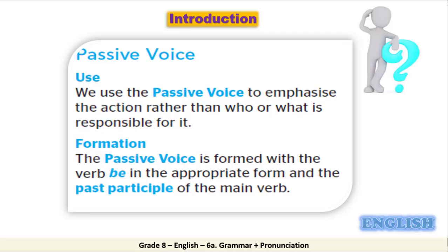Now let's have a look at the introduction of our lesson today. In today's lesson, we'll learn how to change sentences in the present simple and past simple active into passive. We use the passive voice to emphasize the action rather than who or what is responsible for it. The passive voice is formed with the verb 'be' in the appropriate form and the past participle of the main verb.